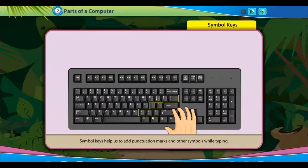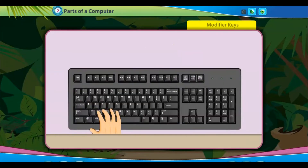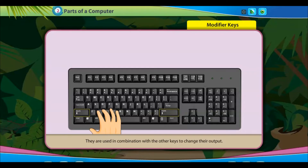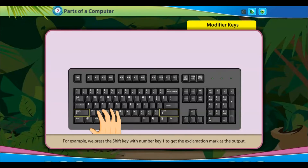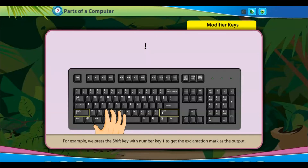Symbol keys help us to add punctuation marks and other symbols while typing. Modifier keys modify the functions of other keys — they are used in combination with other keys to change their output. For example, we press the shift key with number key 1 to get the exclamation mark as the output.